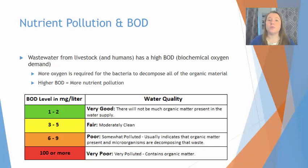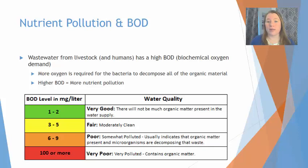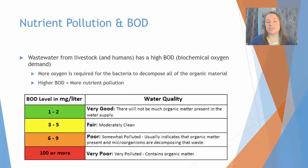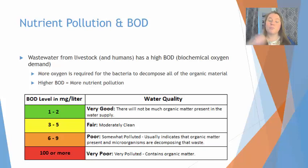Nutrient pollution is associated with the biochemical oxygen demand. We've talked about nutrient pollution earlier in this course when we discussed how wastewater from livestock adds extra nutrients to a water body, and this can lead to eutrophication. This can also increase the biochemical oxygen demand, which is the demand of the bacteria and decomposers on oxygen in the water during their processes of decomposing or breaking down organic pollutants. A higher BOD means you have more nutrient pollution.